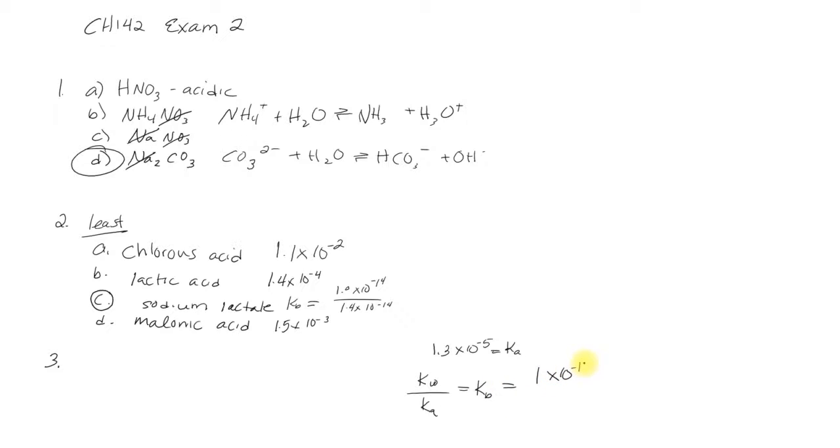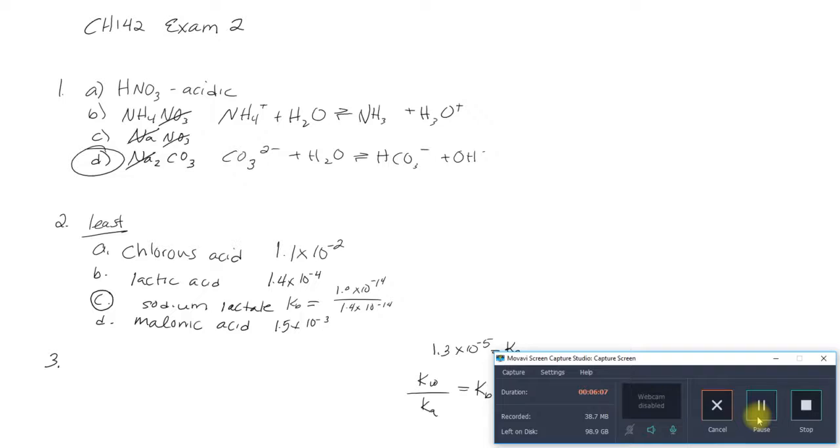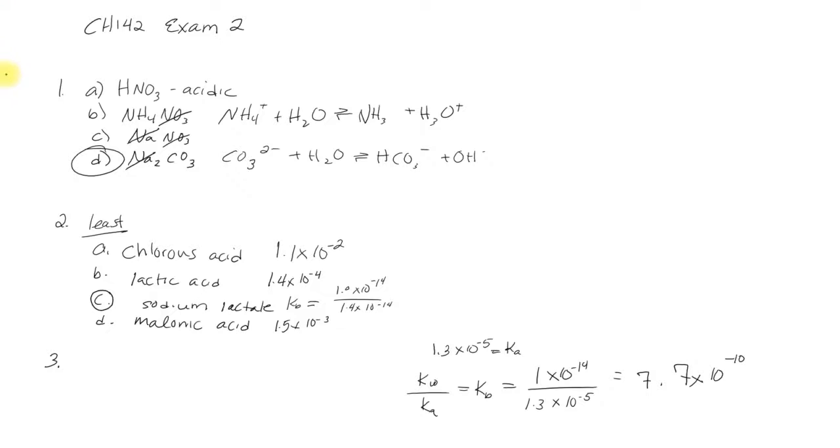We're assuming room temperature as usual. The calculator says it's about 7.7 times 10 to the -10. I look at the choices and there isn't a choice for times 10 to the -10. I'm guessing I changed the acid and forgot to change the answers. So that's my mistake.